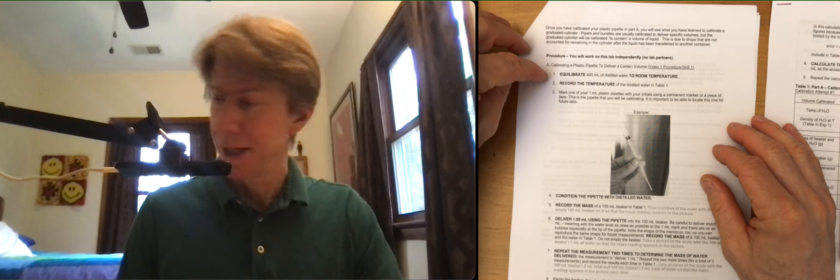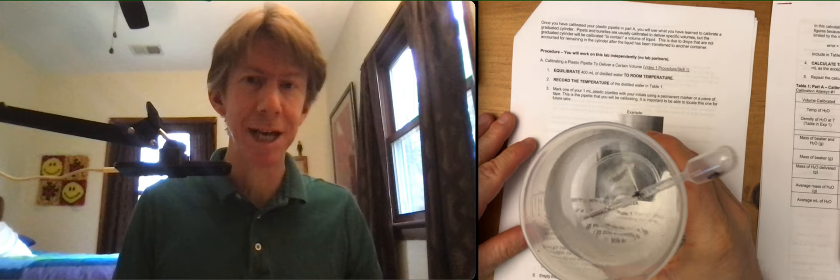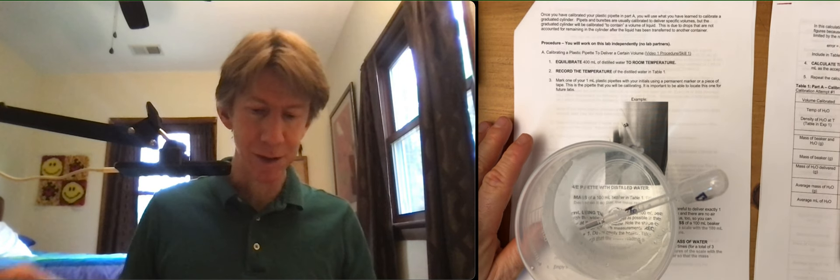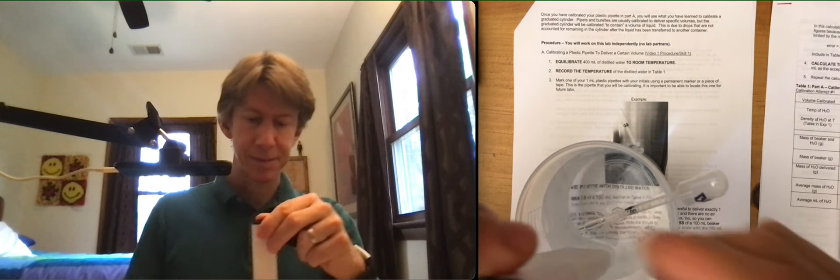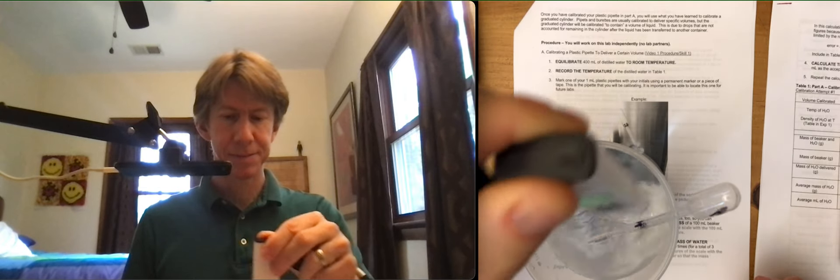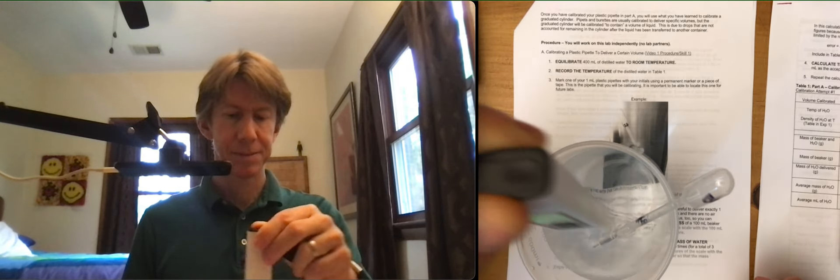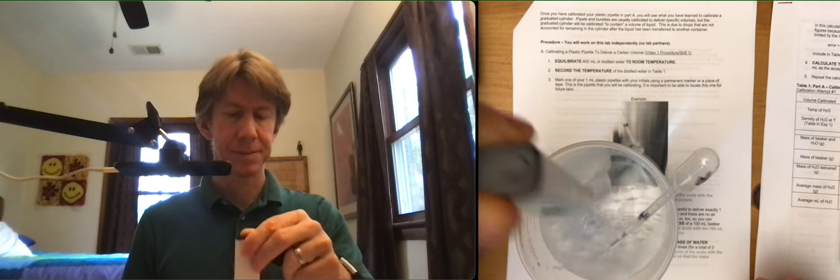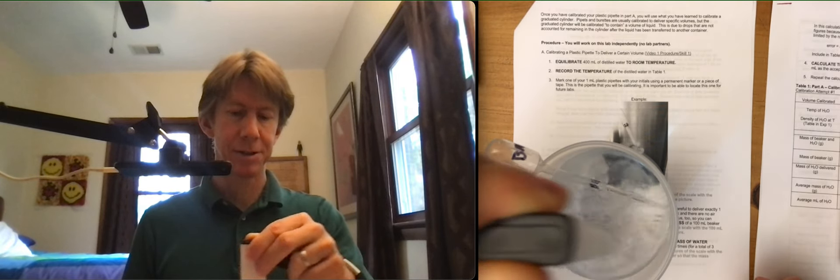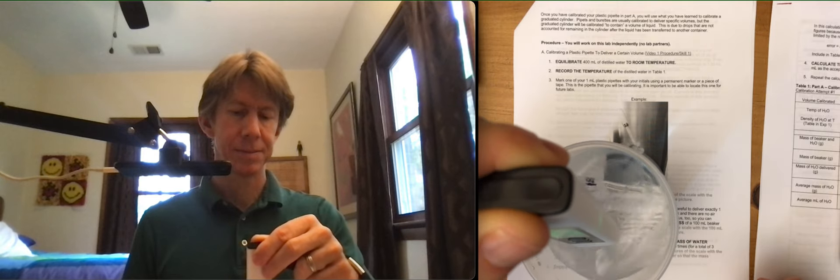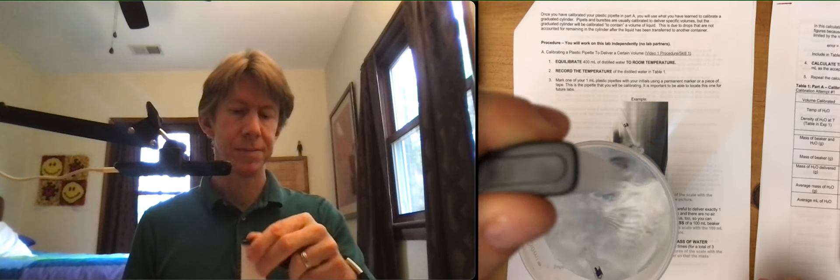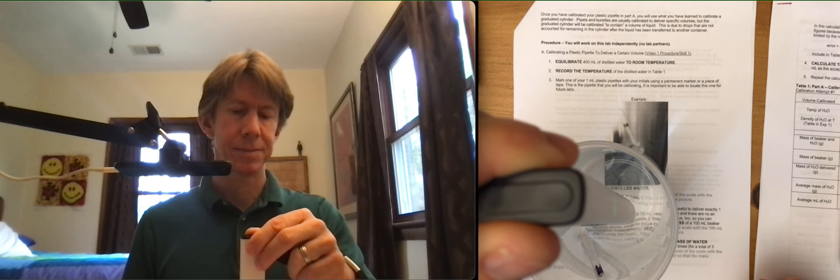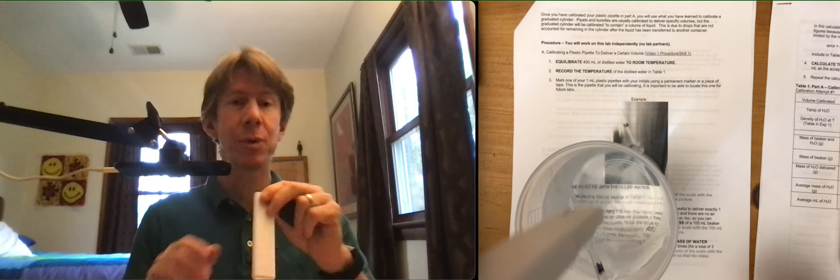So let's get to the procedure, calibrating a plastic pipette to deliver a certain volume. Equilibrate 400 milliliters of distilled water or tap water in this case to room temperature. Record the temperature of the distilled water, so it might have been in here for a long time. Get the temperature. Swirl it around.